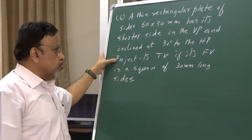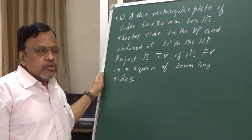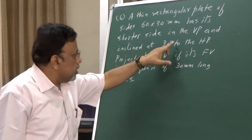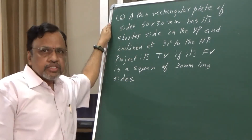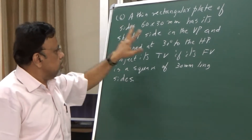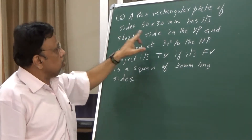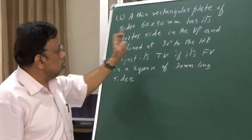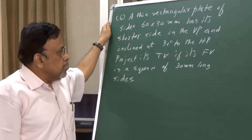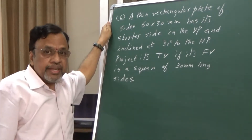The front view is a square of 30 mm long sides. If you just observe this problem, I have given one inclination — 30 degrees. With reference to what? I have given this 30 degrees with reference to a side. That is, the rectangular plate has a shorter side in the VP which is inclined at 30 degrees. That is, I have given the side inclination. But we know that side inclination generally has to be satisfied at the later stages.